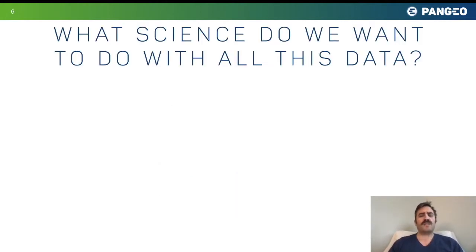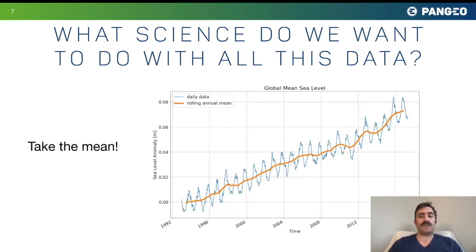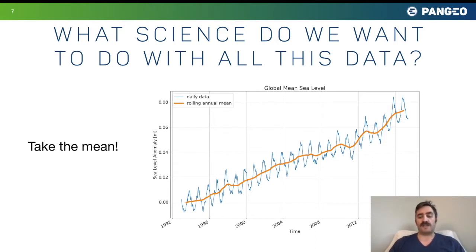What do scientists want to do with all this data? There are a lot of different workflows. A lot of what scientists do is pretty simple statistics using large datasets. For example, we can take the mean of global sea level satellite observations to see the very worrying trend of rising sea level directly from remote sensing data.